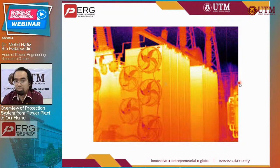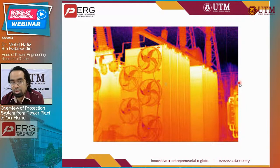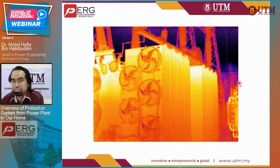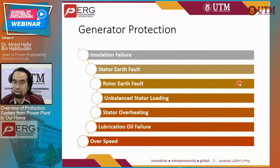Some other faults in the transformer include overheating and degradation of insulation quality, which can be detected by various means. I'm showing a thermal image of the temperature of a transformer — by thermal imaging you can detect the presence of a hot spot and proceed with whatever action is needed. As for generator protection, there are various types and each will require a different, specific or dedicated protection system.